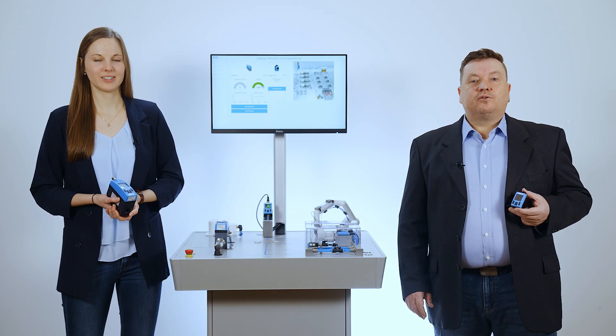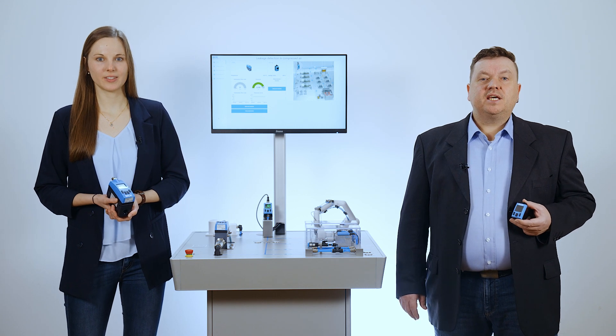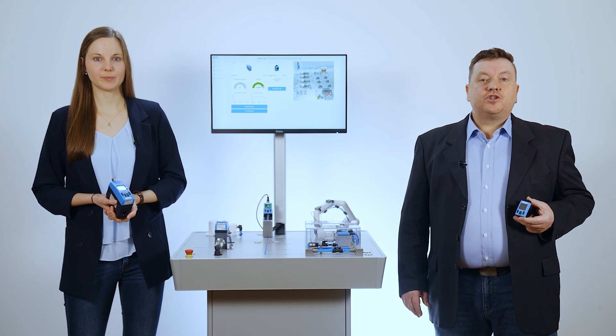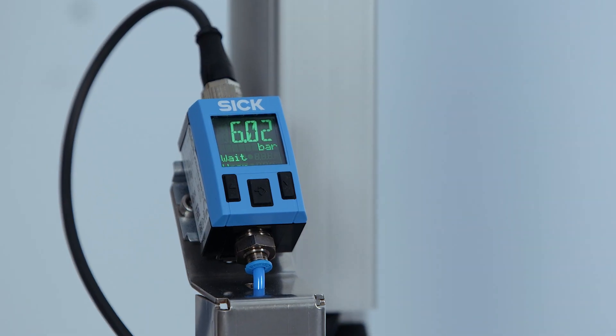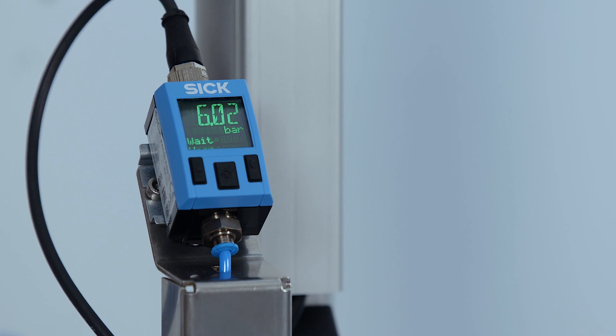A cost-effective alternative to the FTMG is the leakage tester version of the PAC50. As already mentioned, the sensor is intended for applications in smaller compressed air networks, separate areas of a compressed air network or even individual machine circuits.